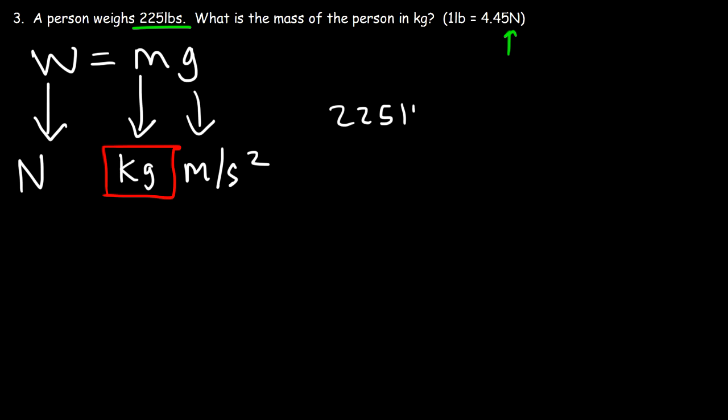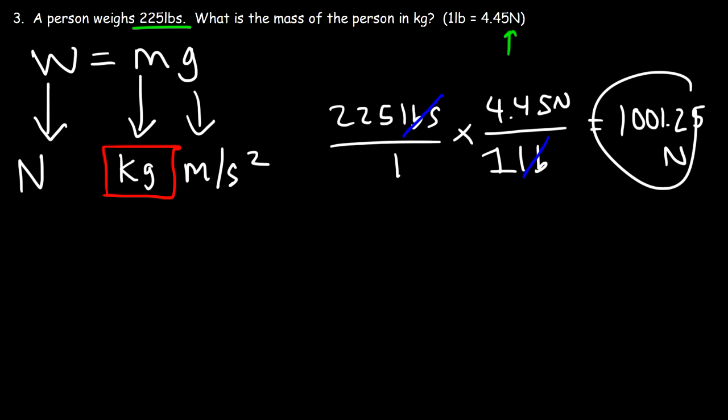So it's 225 pounds over 1, and 1 pound is equal to 4.45 Newtons. So the unit pounds will cancel. So it's going to be 225 times 4.45. So the person weighs 1,001.25 Newtons. So that's the weight force.